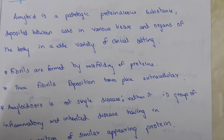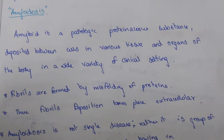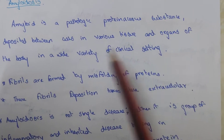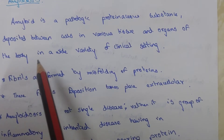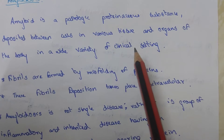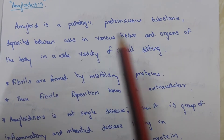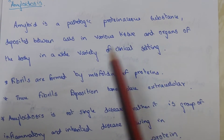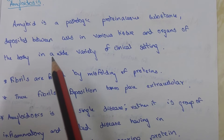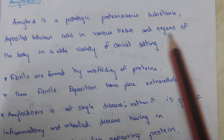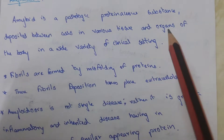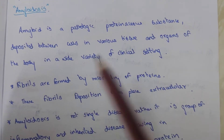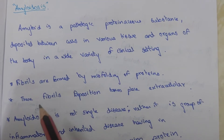Amyloid is a pathogenic protein substance deposited between the cells in various tissues and organs of the body in a wide variety of clinical settings, in different parts of different organs.